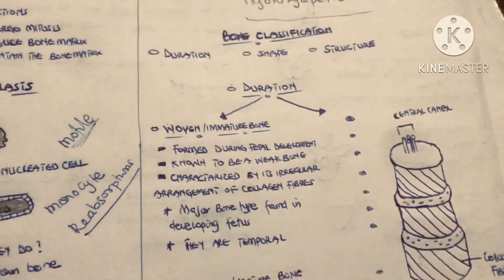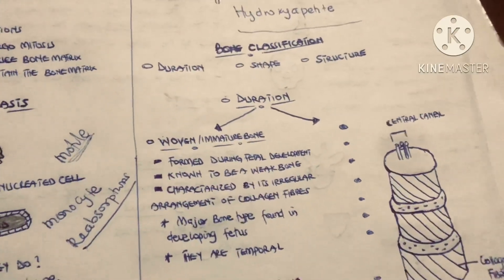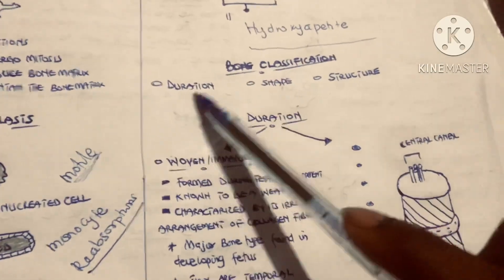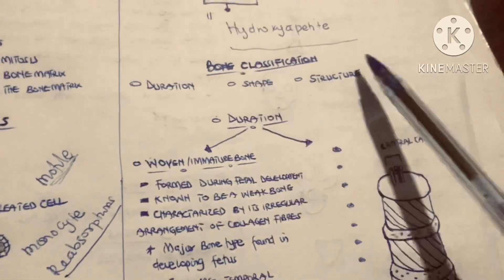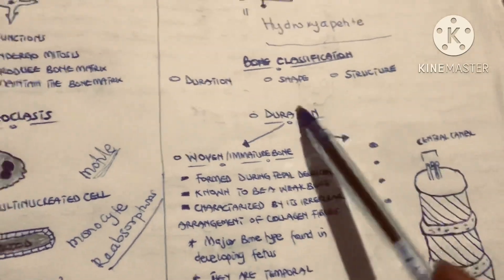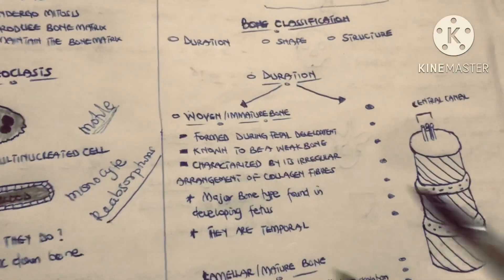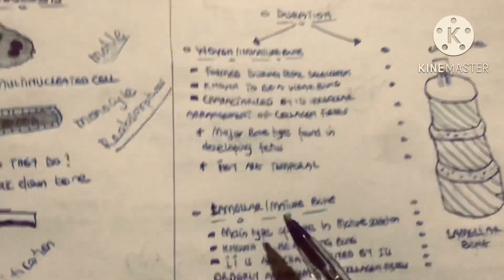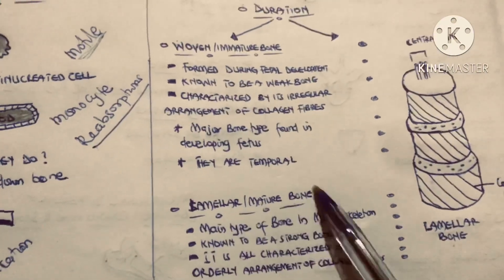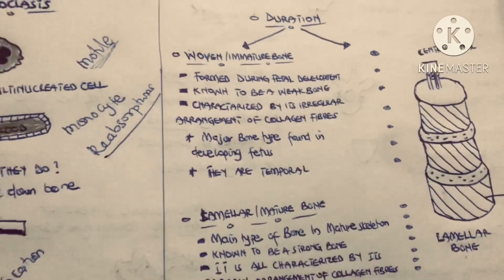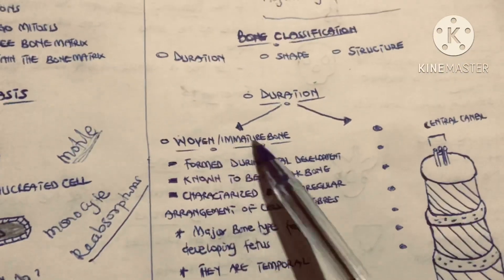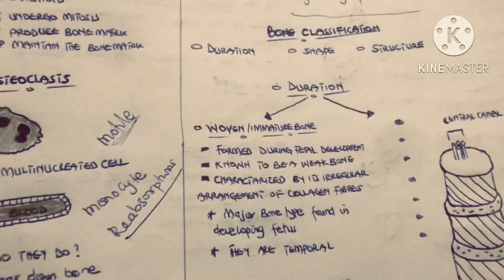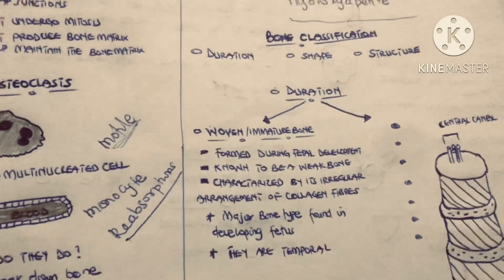The next topic is bone classification. Bones can be classified based on duration, shape, and also structure. Based on duration, we have two types: the woven or immature bone, and the lamellar or mature bone. The woven or immature bone is the first bone to be formed, so people also call it the primary bone.